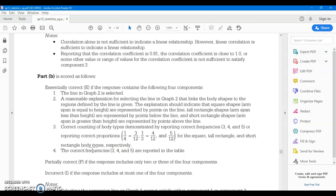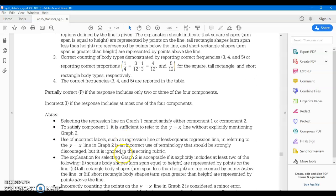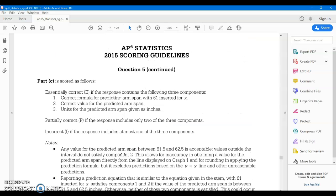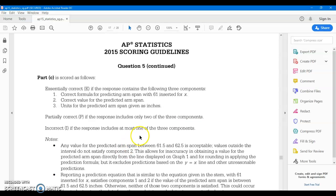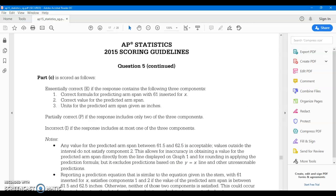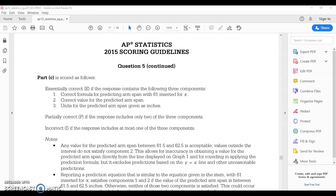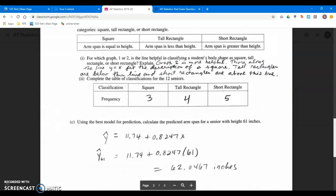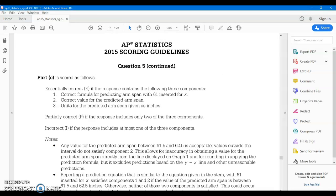And then there actually is a part C to the grading rubric, believe it or not. What else could they be looking for? So correct formula for predicting arm span: 1.61 inserted - oh, you'd have to show a little work right here, so what they're getting at, not just the correct answer. Correct value for the predicted arm span. 62.0 - got a round off somewhere. And then units for the predicted arm span given as inches.